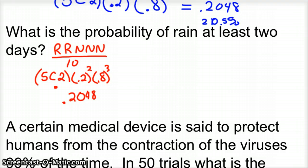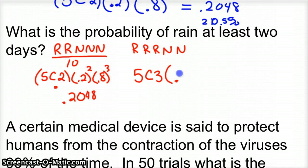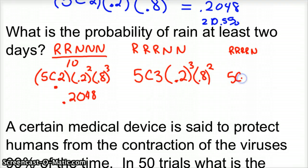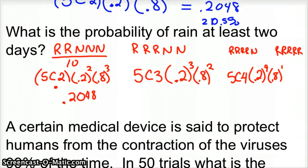But it says at least two days. So you could have three days of rain — R, R, R, N, N — and there are many ways to arrange that. Out of five days, we're picking three days of rain: five-choose-three times 0.2 cubed times 0.8 squared. Then four days of rain — R, R, R, R, N — there are five ways to arrange this: five-choose-four times 0.2 to the fourth times 0.8 to the first. And finally, all five days of rain: five-choose-five times 0.2 to the fifth times 0.8 to the zero — but 0.8 to the zero is one. You calculate all those probabilities and add them together.